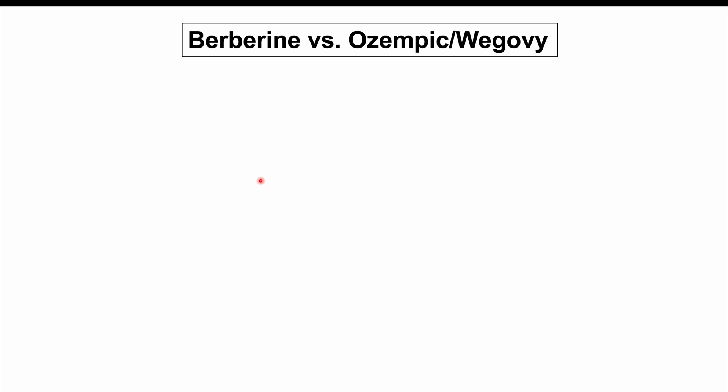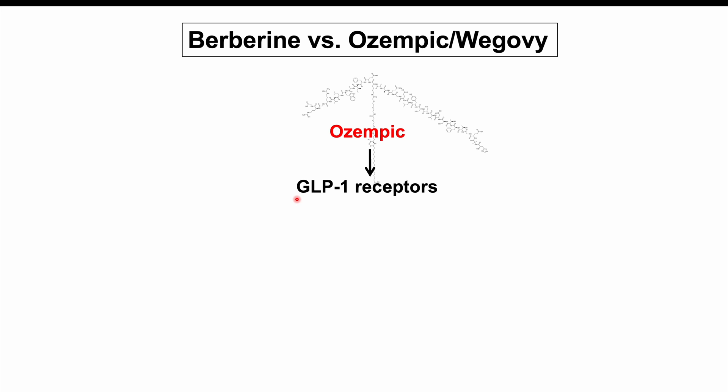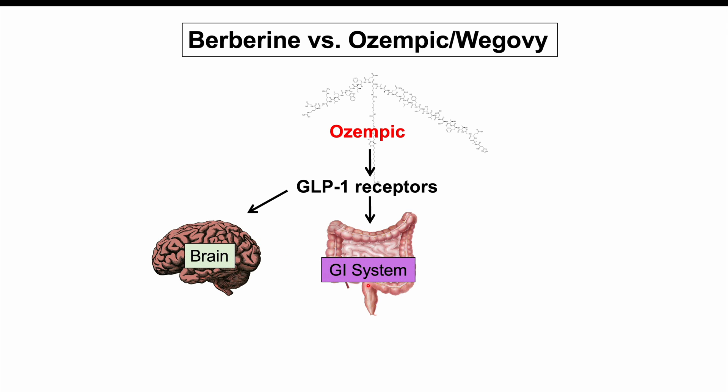We'll first talk about ozempic, otherwise known as Wegovy — Wegovy is a different formulation of ozempic — and this medication is also known as semaglutide. Ozempic works by binding to what are known as GLP-1 receptors, or glucagon-like peptide 1 receptors, making it a GLP-1 receptor agonist. These GLP-1 receptors are located in the brain, the gastrointestinal system, and the pancreas.